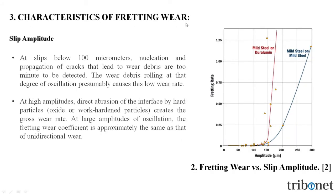Let us understand the characteristics of fretting wear. Fretting wear depends on many parameters which influence the cause of wear. Regarding slip amplitude: at slips below 100 micrometres, nucleation and propagation of cracks that lead to wear debris are too minor to be detected. The wear debris rolling at the degree of oscillation presumably causes this low wear rate. At high amplitudes, direct abrasion of the interface by hard particles, e.g. oxide or work-hardened particles, creates the gross wear rate. At large amplitudes of oscillations, the fretting wear coefficient is approximately the same as that of unidirectional wear. We can see the fretting wear versus slip amplitude for mild steel, where the fretting wear rate increases at an amplitude between 100 to 150 micrometres.